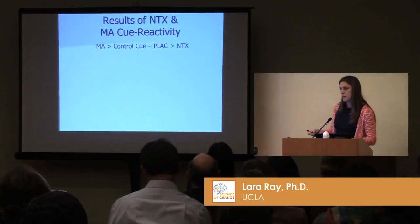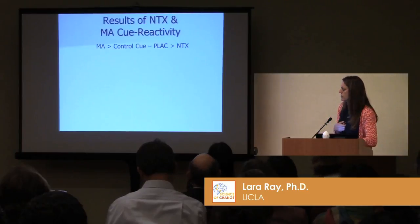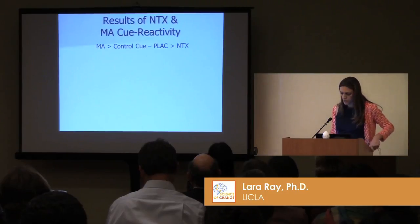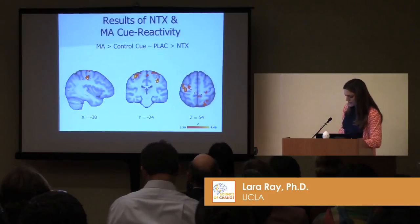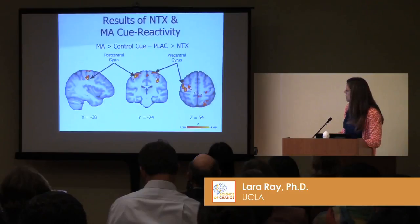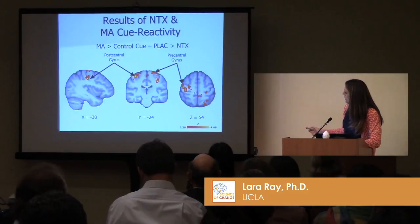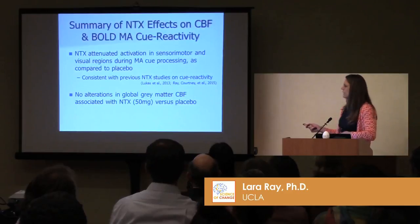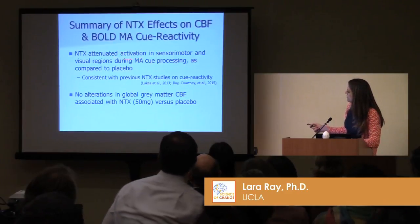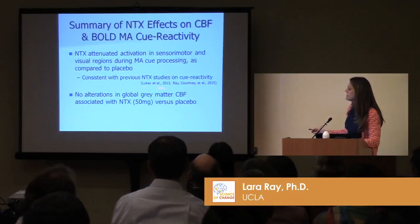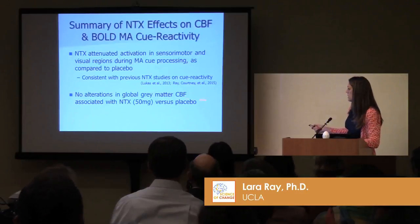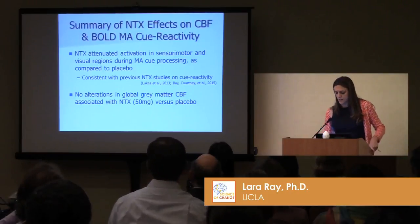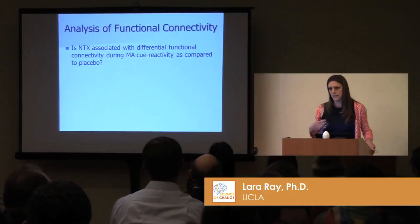Now we can look at the snapshot of brain activation for meth versus control cues, and ask how naltrexone compared to placebo. What we find is these areas were more active on placebo than on naltrexone, meaning naltrexone decreased activation of sensory motor regions — specifically postcentral and precentral gyrus and the occipital cortex. So naltrexone attenuated sensory motor and visual activation during meth cue processing. This is actually quite consistent with studies of naltrexone and cue reactivity, including our own study looking at smokers.